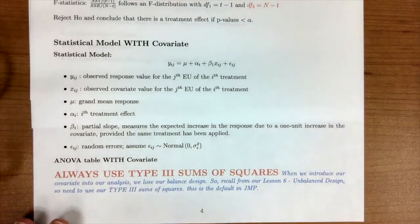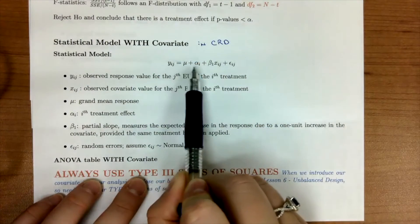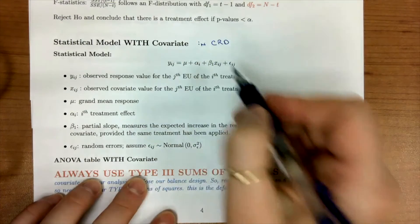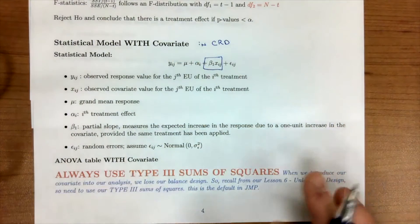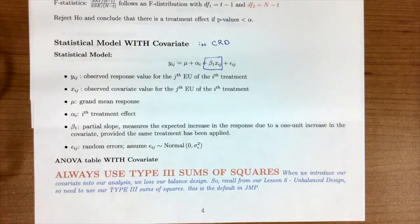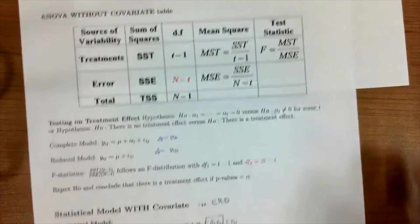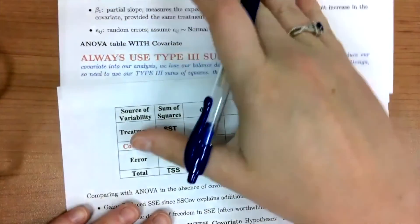Now for the statistical model with a covariate in a CRD: we still have our response, grand mean, and treatment effect, but now we add the term beta times X, which should look familiar from multiple linear regression. Beta one can be thought of as the partial slope — it measures the expected increase or decrease in the response due to a one-unit increase in the covariate, provided you are in the same treatment being applied. We also always want to use Type III sums of squares.